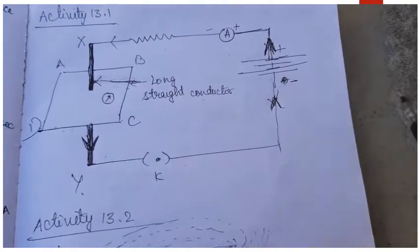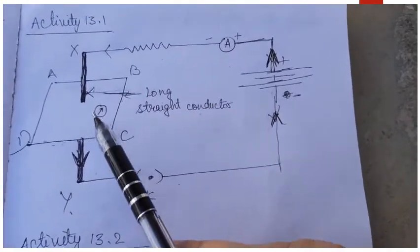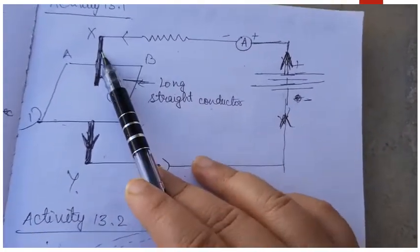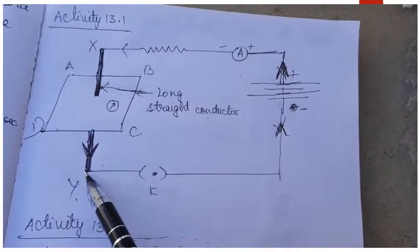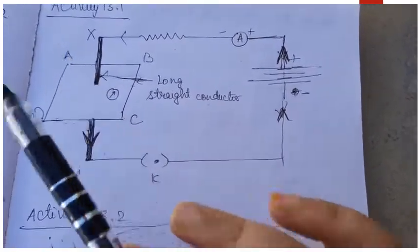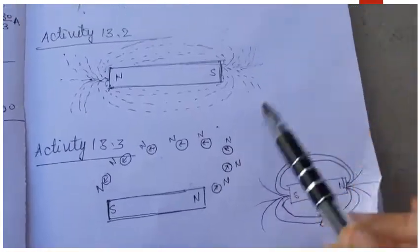This experiment proves that a current-carrying wire produces a magnetic field around it.